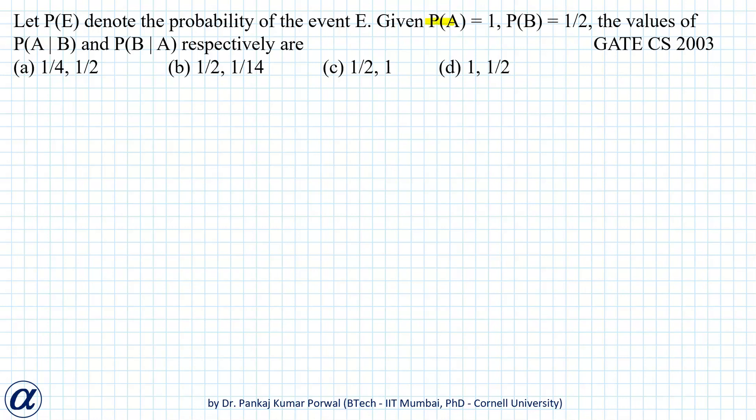We are given that P(A) is equal to 1 and P(B) is half. We want to find the conditional probabilities of A given B and B given A.